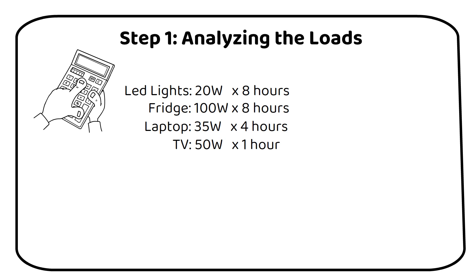A quick tip for appliances with short runtimes like a kettle. Convert their usage into hours. For example, 5 minutes divided by 60 minutes becomes 0.083 hours.